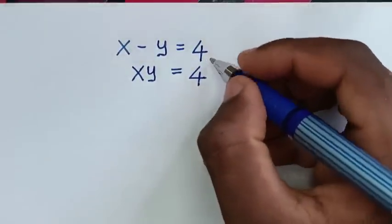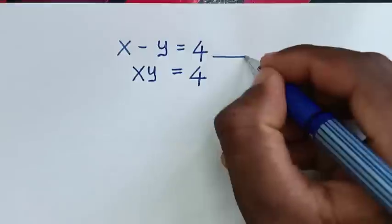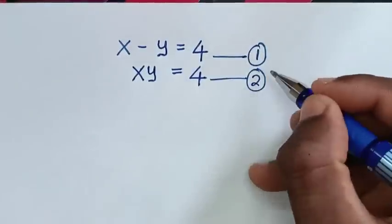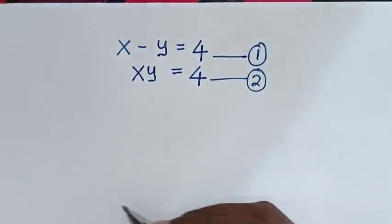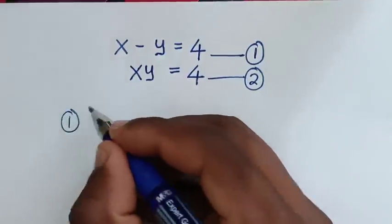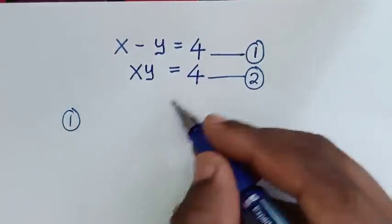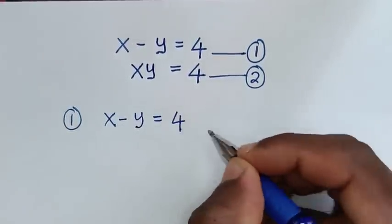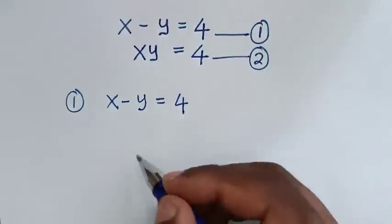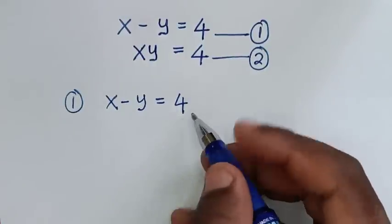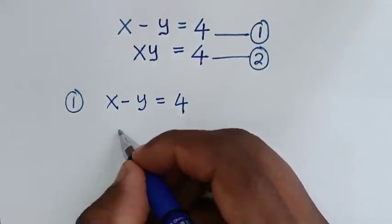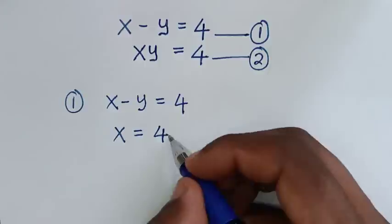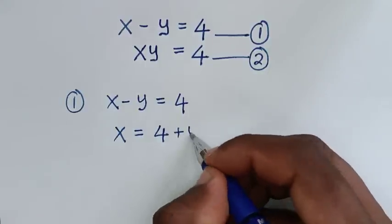In the first step we start by labeling this as equation 1 and this as equation 2. Then from equation 1, which is x minus y is equal to 4, we take the negative y to the right side, so it will be x is equal to 4 plus y.